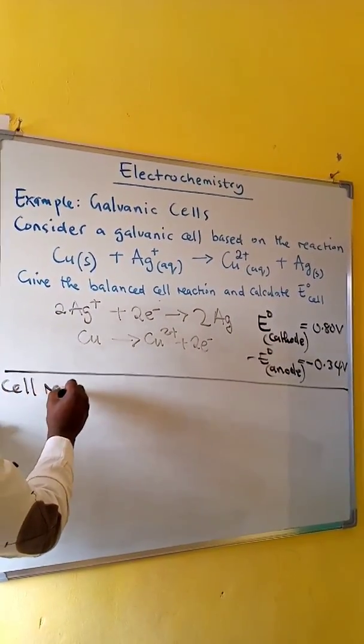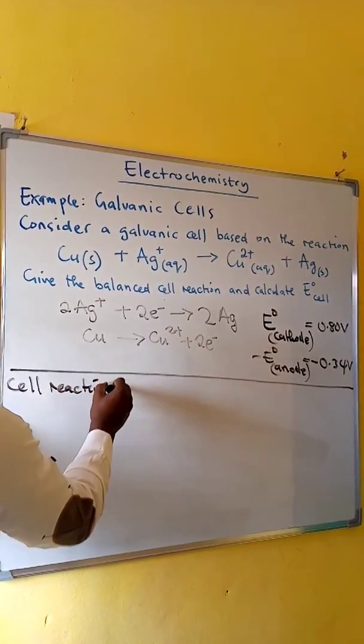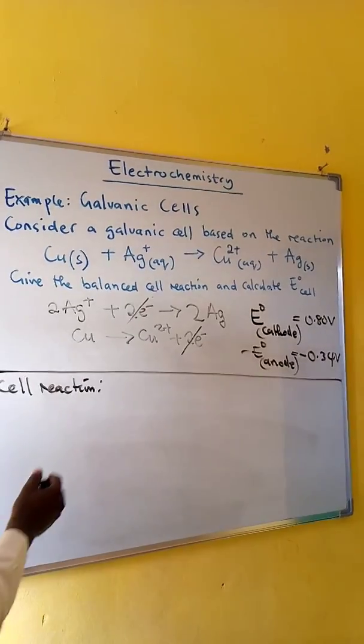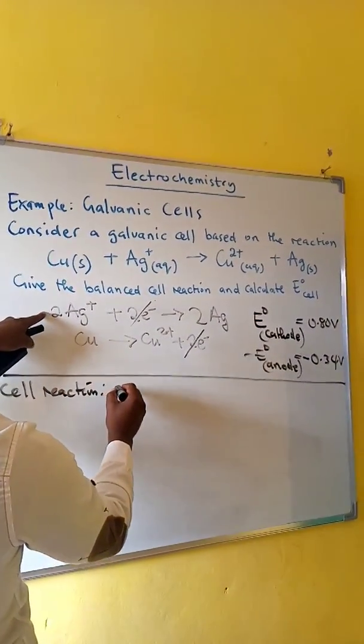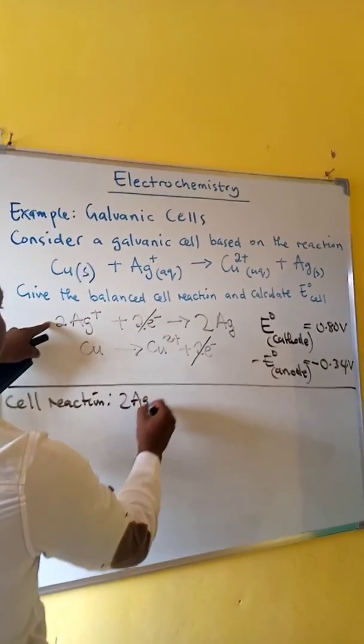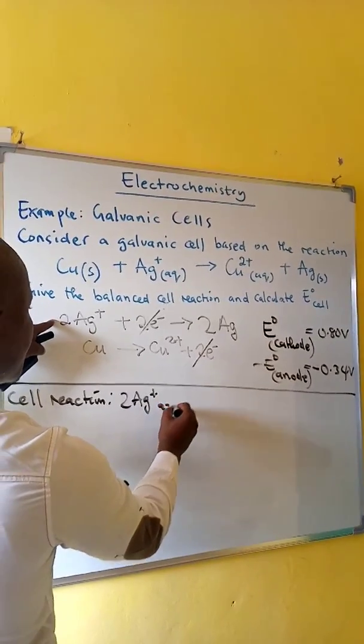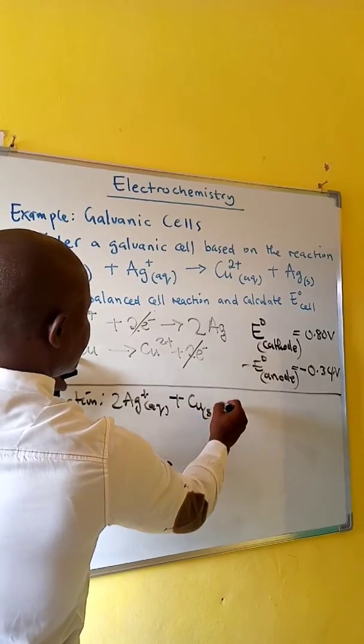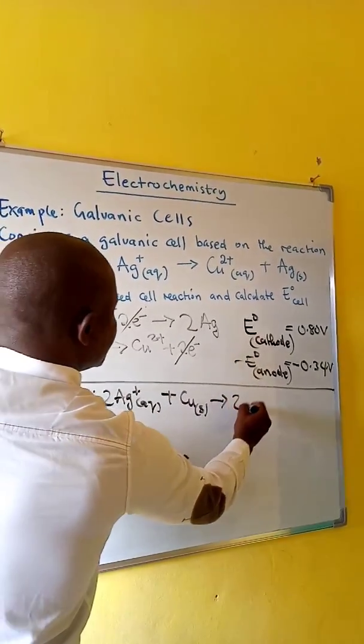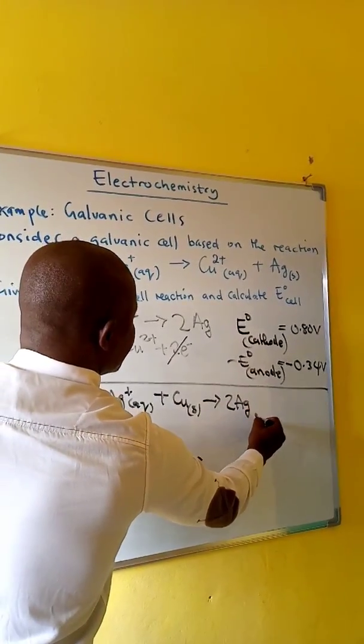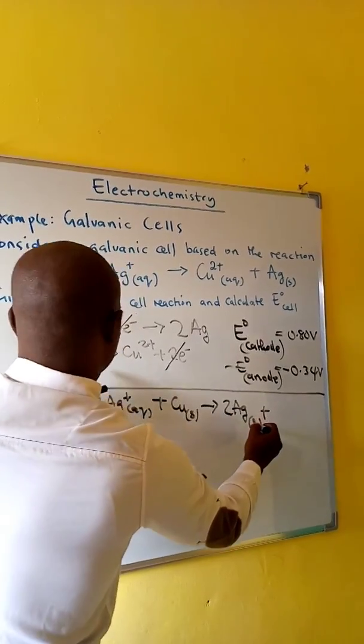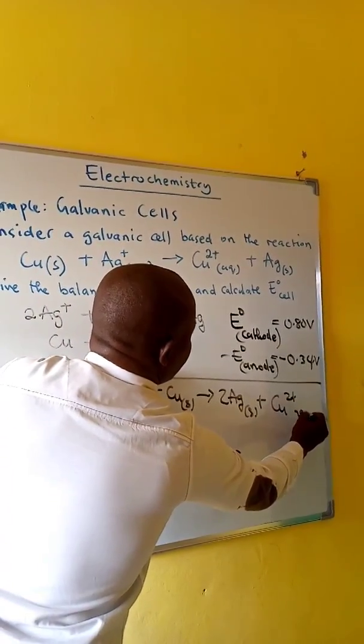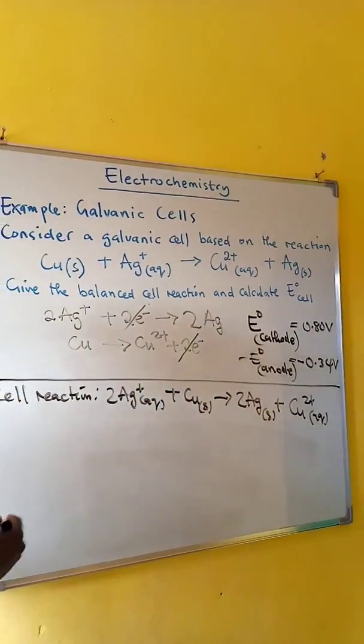Cell reaction: you can cancel the 2 electrons appearing on both sides. We have 2 silver ion aqueous plus copper solid forms 2 silver solid plus copper 2 ion. And this is the cell reaction.